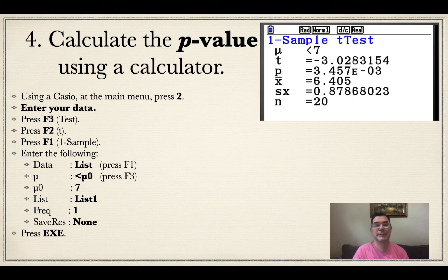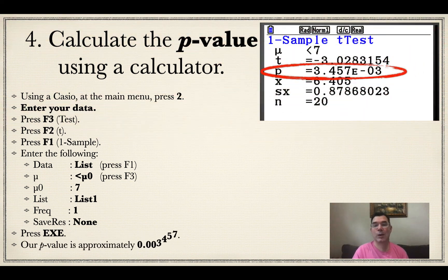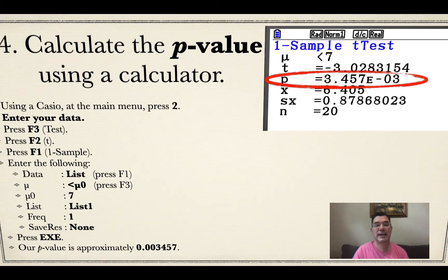It gives me the same data organized the way it was before. Mu is less than seven, my t statistic is calculated there, my p-value is there. It actually calculated x bar and s and n for me just in case I wanted that. My p-value is approximately 0.003457.